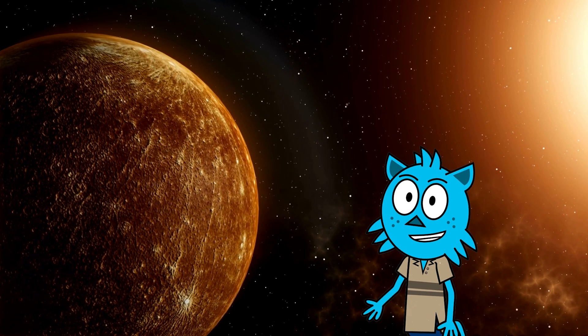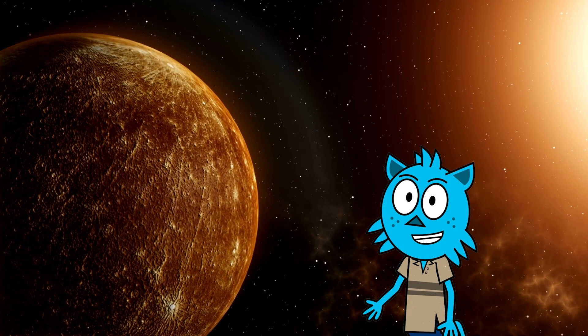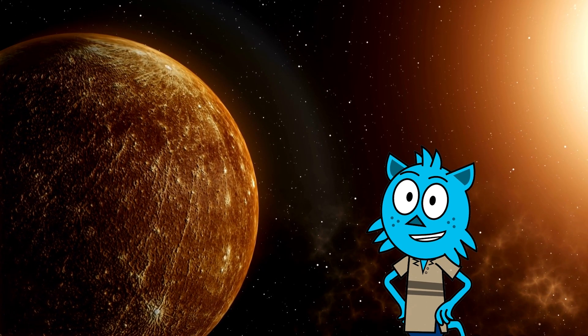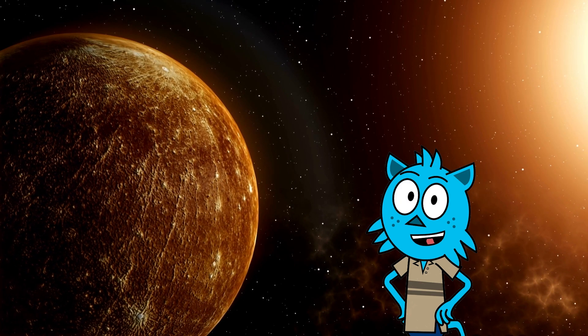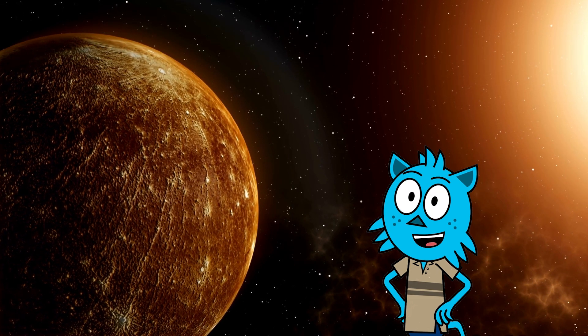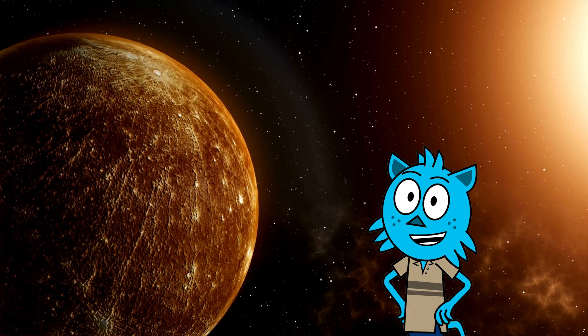Next, we have Mercury, the closest planet to the sun. It's super hot during the day and super cold at night. Mercury's surface looks like a rocky desert, and it has lots of craters from space rocks that hit it.